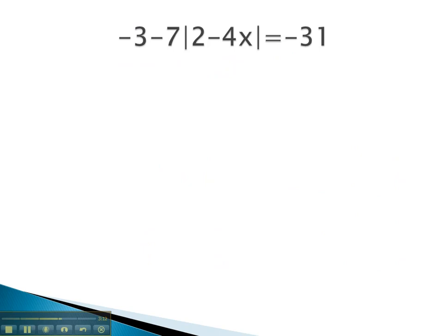In this next problem, again you notice the absolute value is not alone. We first clear the 3 by adding 3 to both sides. We now have negative 7 times the absolute value of 2 minus 4x. This equals negative 28.